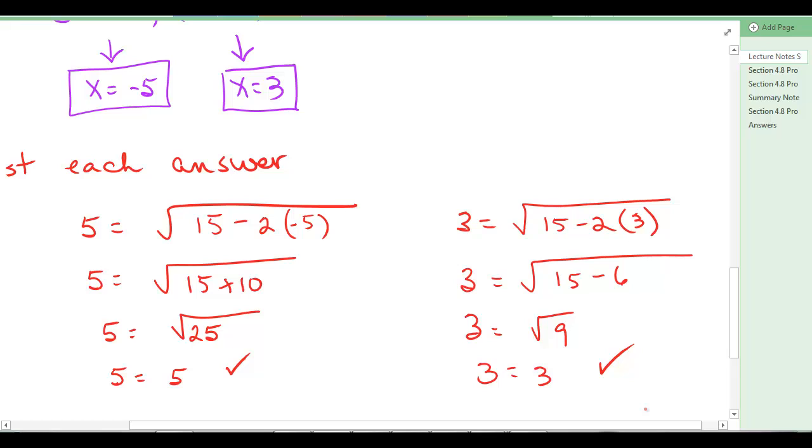You do have to check each answer when you have radical equations. So you test each answer and see if it makes a true statement. In this case, it does. We may have some on the homework where it does not. If it does not, we're going to throw away that answer that doesn't check out. It's called an extraneous root and it won't be one of the answers that you would fill in the blank with.